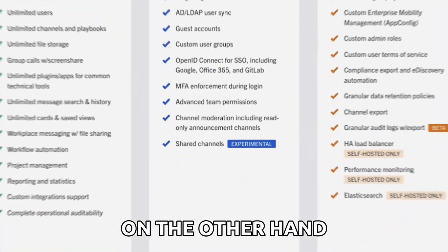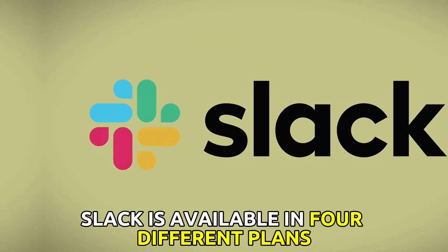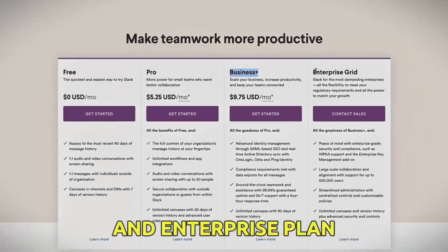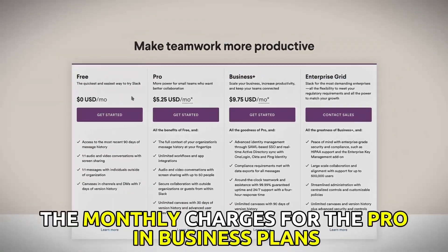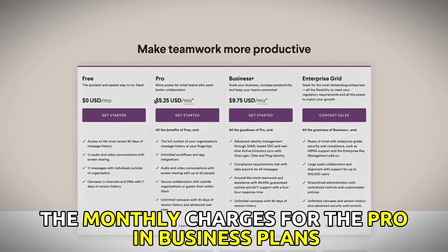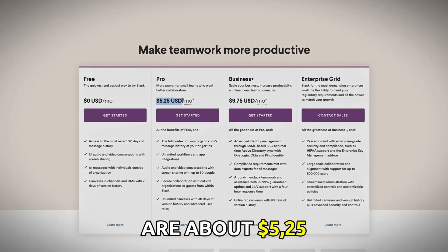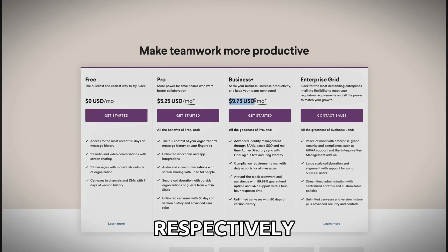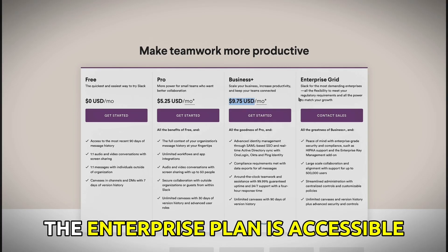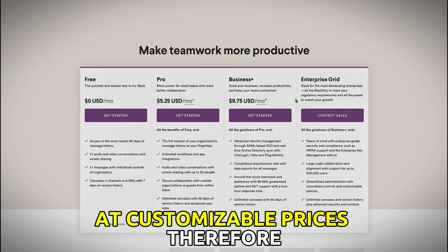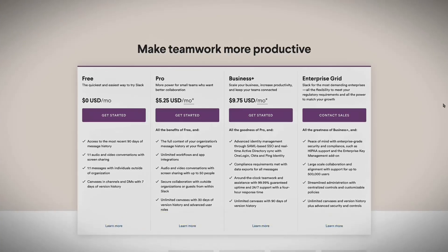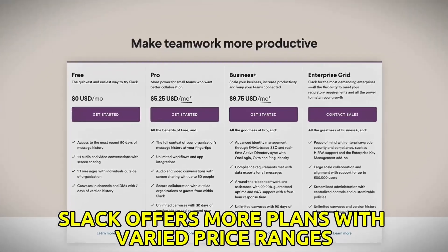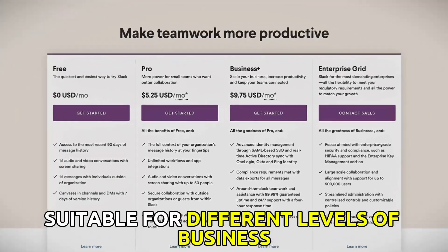On the other hand, Slack is available in four different plans: free, pro, business, and enterprise plan. The monthly charges for the pro and business plans are about $5.25 and $9.75, respectively. The enterprise plan is accessible at customizable prices. Therefore, Slack offers more plans with varied price ranges suitable for different levels of business.